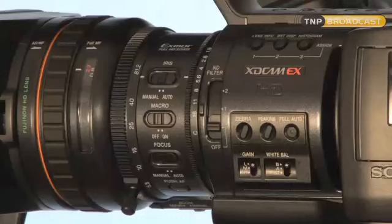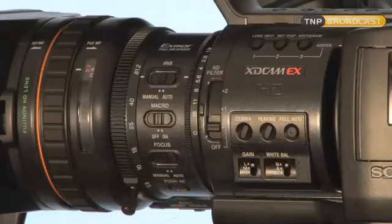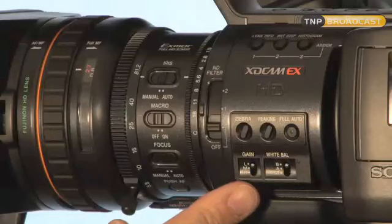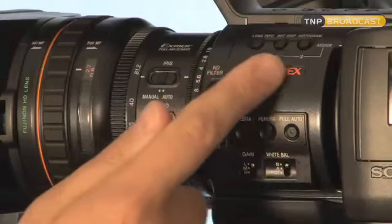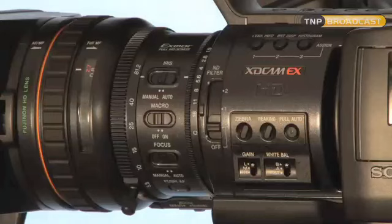Along the side of the EX-1R you've got all the usual controls that you would expect to find on the camera: iris, macro, auto and manual focus controls, a built-in ND filter select switch with two choices, zebra peaking and other auto controls, and your usual gain and white balance controls as well as various other controls on the camera.